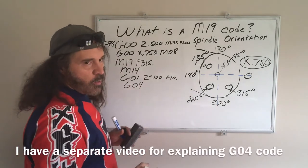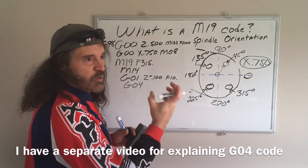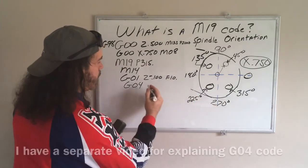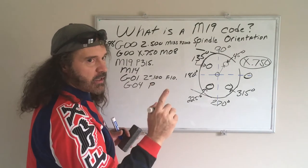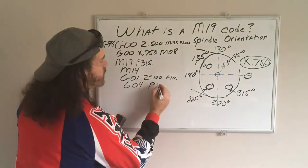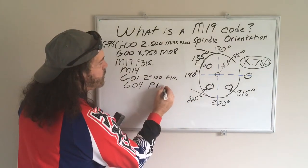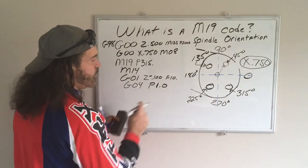It's called a G04, which is a dwell, which means it sits there for a specified time. That's another P code. I want it to sit there for one second just to make sure it's not going to leave a chip, so we put a P1.0. If you wanted to sit there for 10 seconds, you would change that to P10.